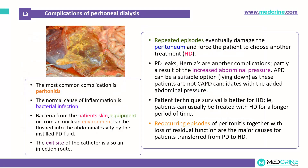The most common and important complication of peritoneal dialysis is peritonitis. The usual cause of this inflammation is a bacterial infection, whereby bacteria can enter from the patient's skin, equipment, or from an unclean environment, which can be flushed into the abdominal cavity by the instilled peritoneal dialysis fluid. The exit site of the catheter is also a known infection route. Repeated episodes eventually damage the peritoneum and force the patient to choose another treatment, preferably hemodialysis.